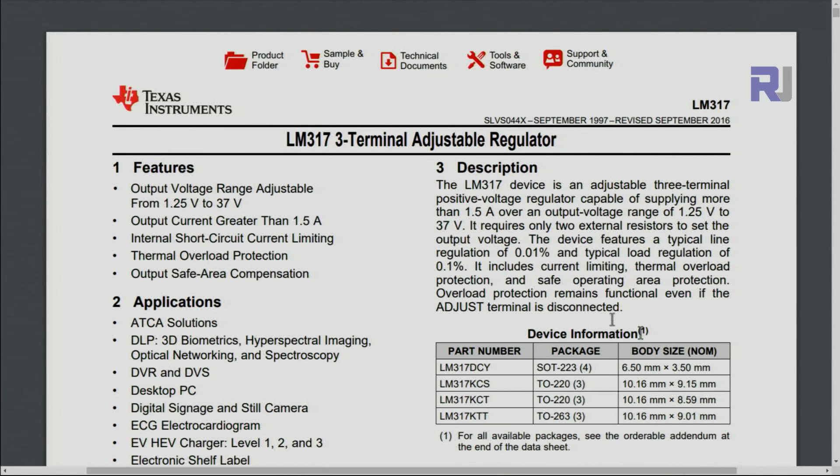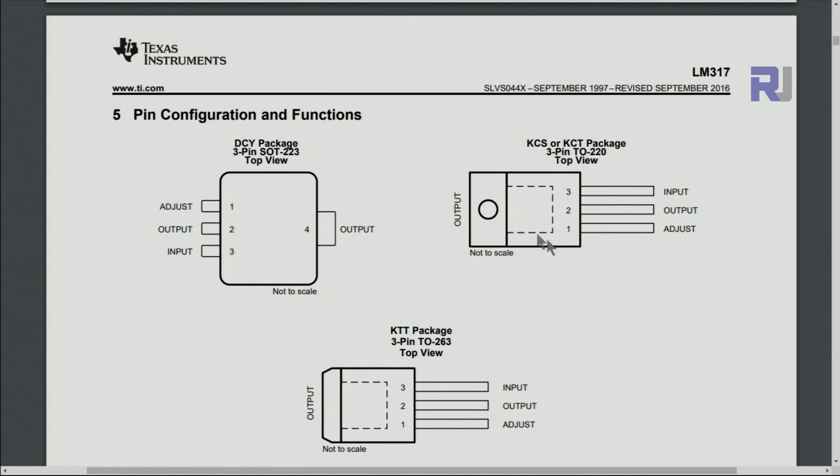Now let's have a look at the data sheet. This regulator is produced by many manufacturers but specifications are very close to each other. So this data sheet is for Texas Instrument. As you can see the output voltage is 1.25 to 37 volts it can output and the maximum current 1.5 ampere. It has short circuit current limiting and also terminal overload protection and output safe area compensation. This has two packages. This is a package that we have because it has a hole for the screw. The other package will not have that or maybe they have surface mount type.